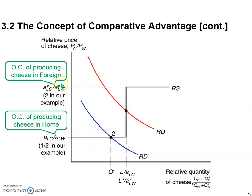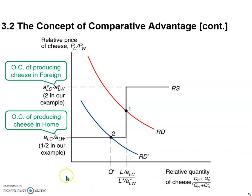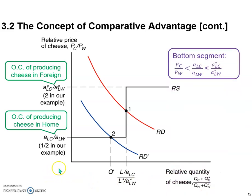We will also later discuss these two specific values or levels of relative price — in other words, when PC over PW is just equal to the opportunity cost of producing cheese in foreign, or just equal to the opportunity cost in home, then what's going to happen to the relative quantity.